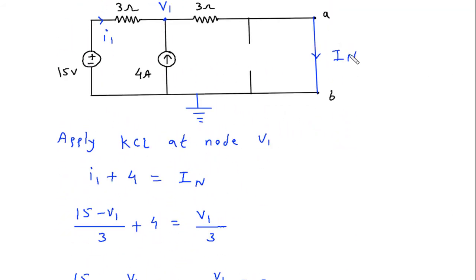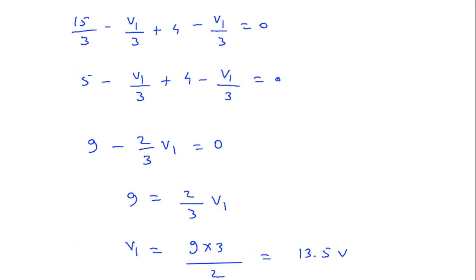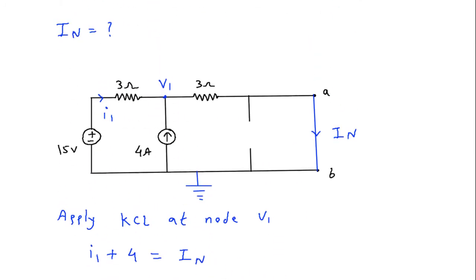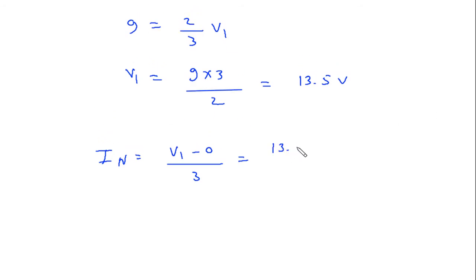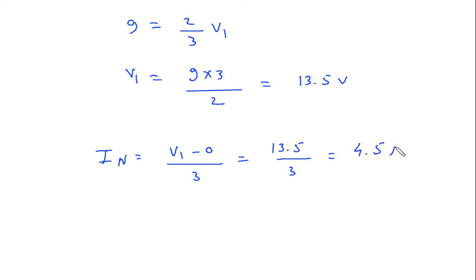What we have to find? We have to find In, and In is equal to V1 minus 0 by 3. So V1 is 13.5 by 3, which is 4.5. The unit of current is ampere, so therefore In is equal to 4.5 ampere.